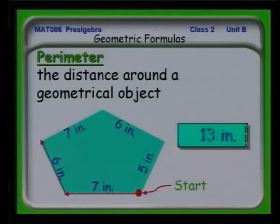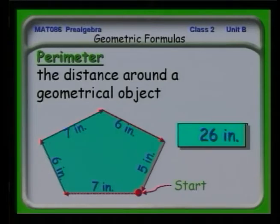So we've walked seven inches. We've walked a total of seven plus six or 13 inches. Another seven gives us 20 inches. Another six gives us 26 inches. And another five, having walked all the way around this object, gives us 31 inches. So the perimeter of an object is the distance around the object. Whenever you see the word perimeter, think of taking a walk and going around something.